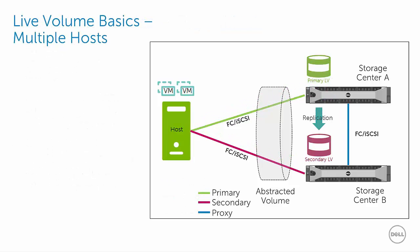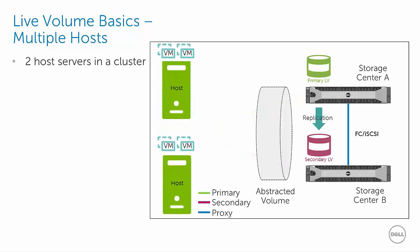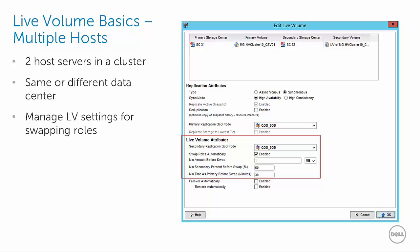Now that we have reviewed a simple live volume configuration with one host server, let's introduce a second host server to see how live volume works with multiple hosts in a cluster configuration. Host server nodes that form a cluster might be located in the same rack, the same data center, or might even be geographically separated by some distance. The design must allow for adequate bandwidth and low enough latency to ensure acceptable performance for the workload. With two hosts available, it is possible to configure the host mappings and live volume so that live volume will automatically swap roles based on I/O patterns. The settings to enable and configure automatic role swap are found under the properties for each live volume.